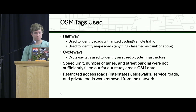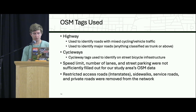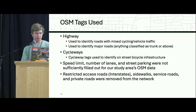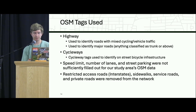There were some attributes we really wanted but weren't available for our local network, like speed limit, number of lanes, and street parking, so we weren't able to use these. Before doing any routing, we filtered out restricted access roads like interstates, sidewalks, service roads, and private roads from the network.